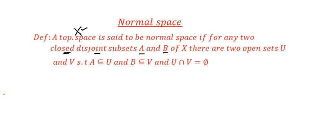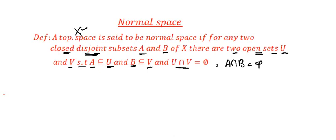We call those sets A and B. Correspondingly, you need two open sets U and V. The situation is such that the first closed set A is contained in the first open set U, and the second closed set B is contained in the second open set V. Since A and B are disjoint, U and V are also selected to be disjoint — their intersection is empty. A topological space X is a normal space if this happens for each pair of disjoint closed sets.